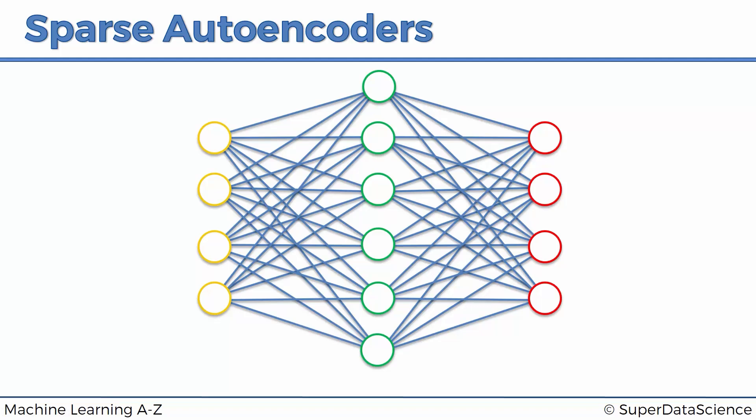It introduces a constraint on the loss function, or a penalty on the loss function, which doesn't allow the autoencoder to use all of its hidden layer every single time. So at any time, the autoencoder can only use a certain number of nodes from its hidden layer.